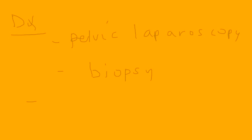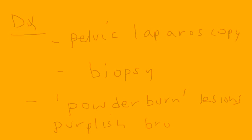The definitive diagnosis is made by laparoscopy — you have to visualize the ectopic tissue directly, and then take a sample for biopsy. What do the lesions look like? They're called powder burn lesions — purplish-brown spots that resemble powder burns. You'll see this term on licensing exams. The biopsy confirms that the tissue is in fact endometrial tissue.